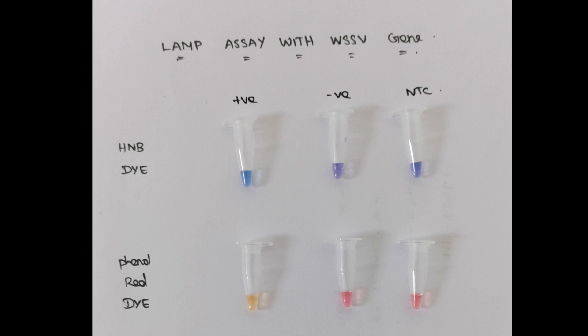Interpretation of results: In calorimetric based LAMP kit, positive sample turns yellow color or light orange color, while remaining two samples negative and NTC are in pink color.